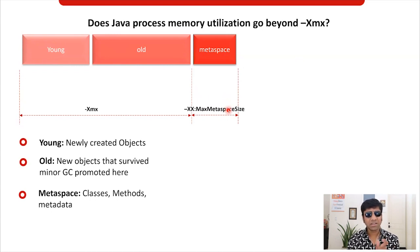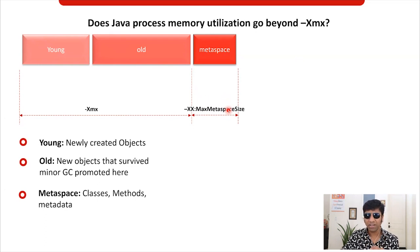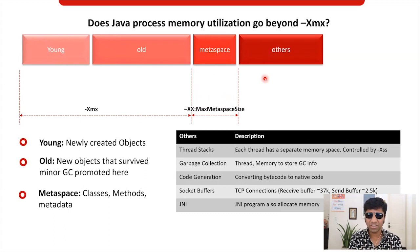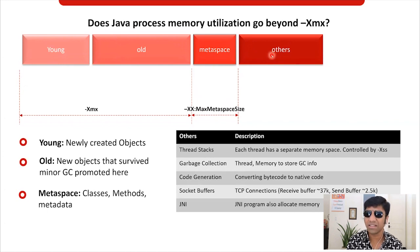And is that all? No, there is some more. There is another region — some people call it off-heap, native, there are different names — but for our discussion, let's call it the 'others' region. In this region, several more important aspects of your application are stored. Where are the threads stored? Threads are a very essential artifact to execute your program. The threads are not stored in the young generation, old generation, or metaspace, but they are stored in this others region.